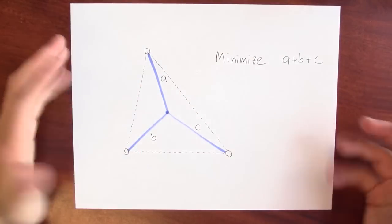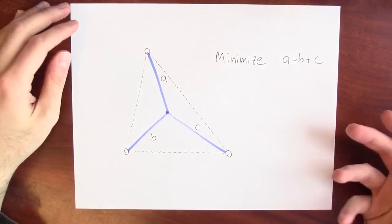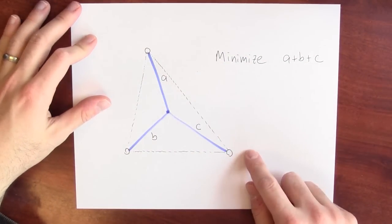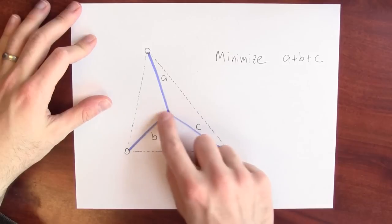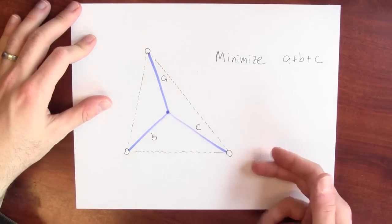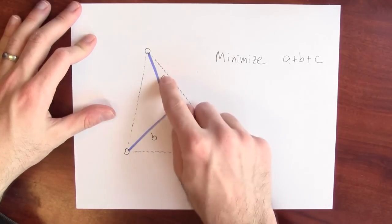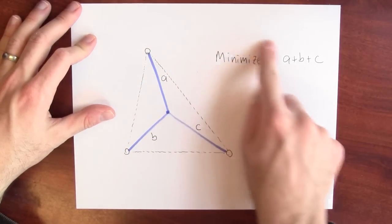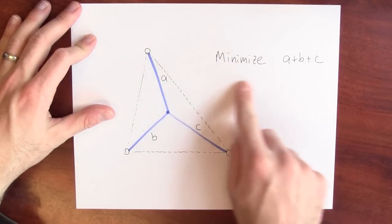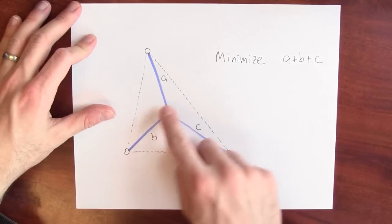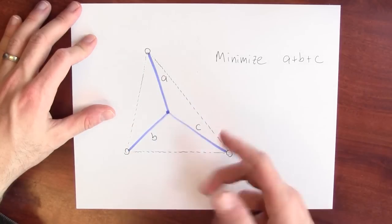This actually turns out to be an optimization problem. Bubbles want to be as small as possible. What I'm really asking for is: I imagine that I've got a triangle, and I'm trying to find a point in the middle of the triangle so that the sum of three lengths, A plus B plus C, is as small as possible — trying to minimize the total length of bubble.